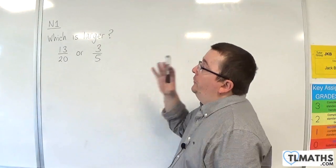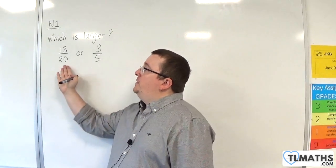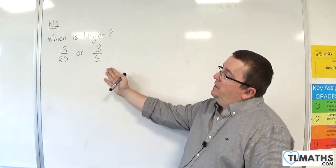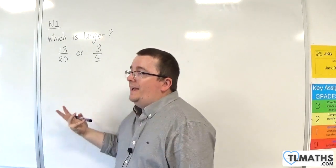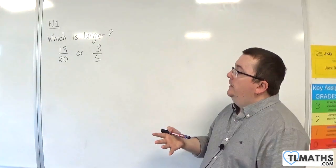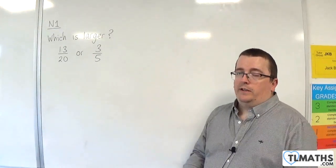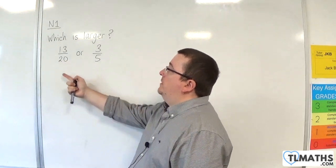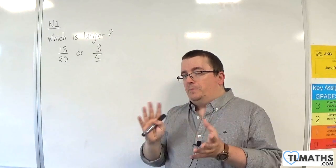In this video, I want to answer the question: which is larger? Is it 13 over 20, or is it 3 over 5? Now, the problem in this case, and the reason why you might not be able to make an immediate answer, is because the denominators are different. We're not comparing like for like. 20ths are not the same size as 5ths, and so it's difficult to compare the two.